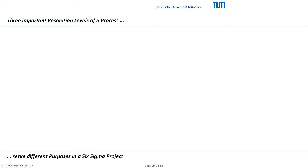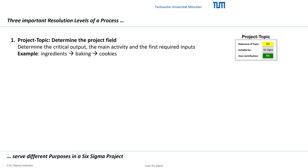In a Six Sigma project, we distinguish three different resolution levels of our perspective on the process. First, identification of the project topic. To identify the project topic, we first focus on the critical output as well as the first required inputs. By this delimitation, we determine the project field with all the summarized activities in between — ingredients, baking, cookies.